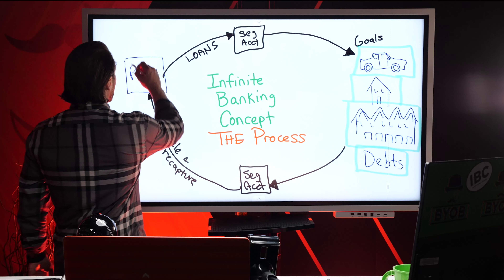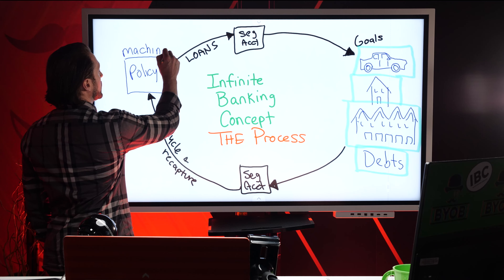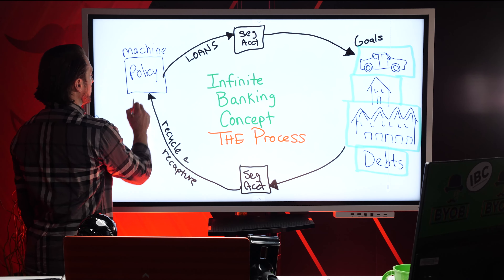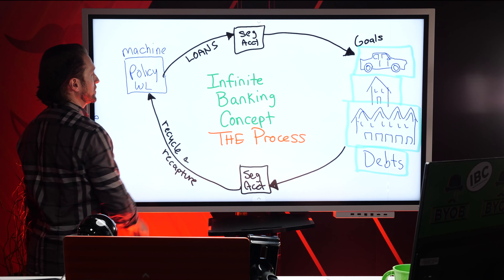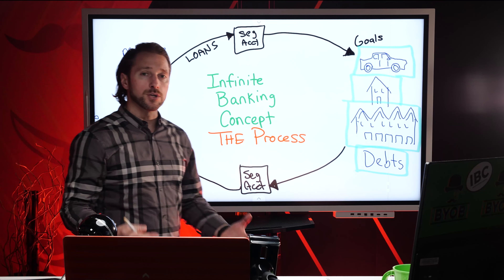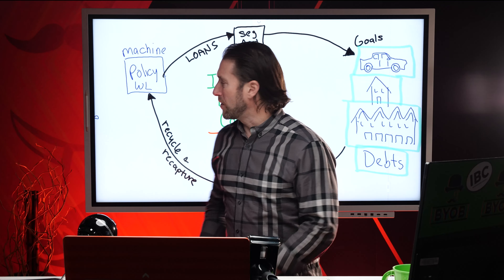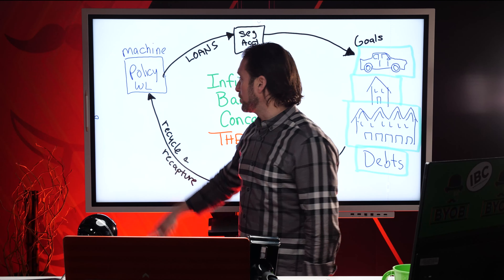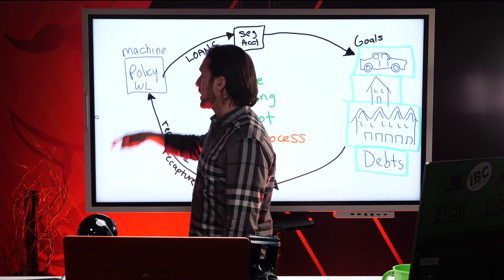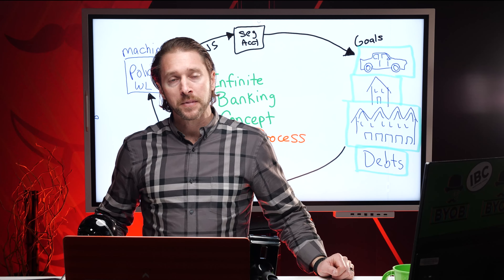And what is your bank? It is the machine — the specially designed and engineered whole life. Why do we use whole life? Because nothing else can do what a whole life policy can. A whole life has two components: a cash value and a death benefit. It's one of the only life insurance policies that also has a level cost, meaning the cost for the death benefit — the base — is level. There's never an increase in that base premium.